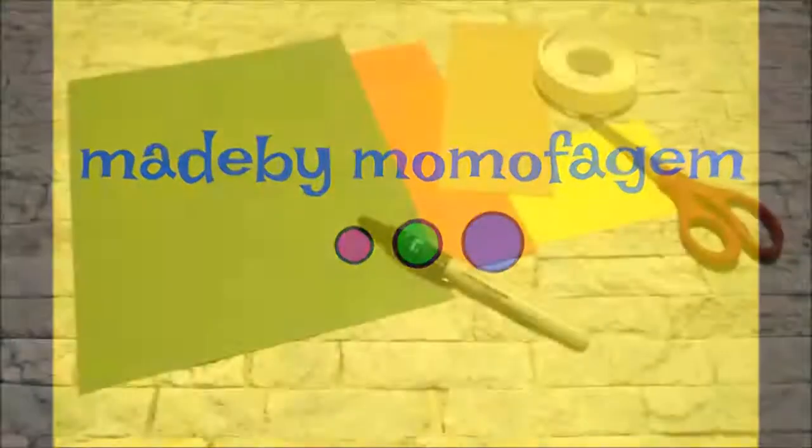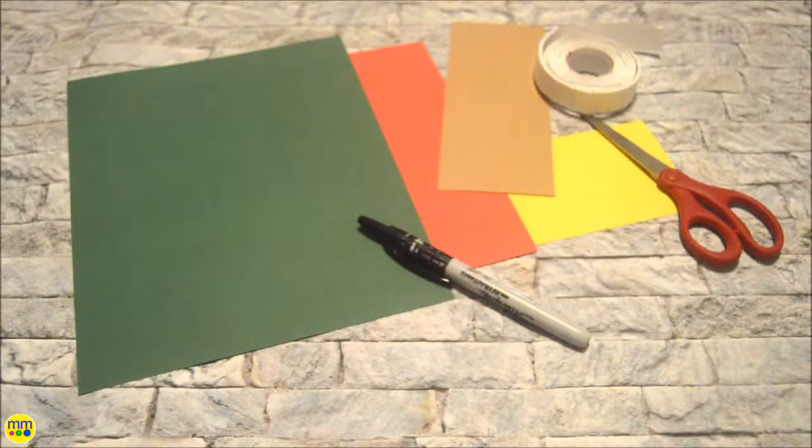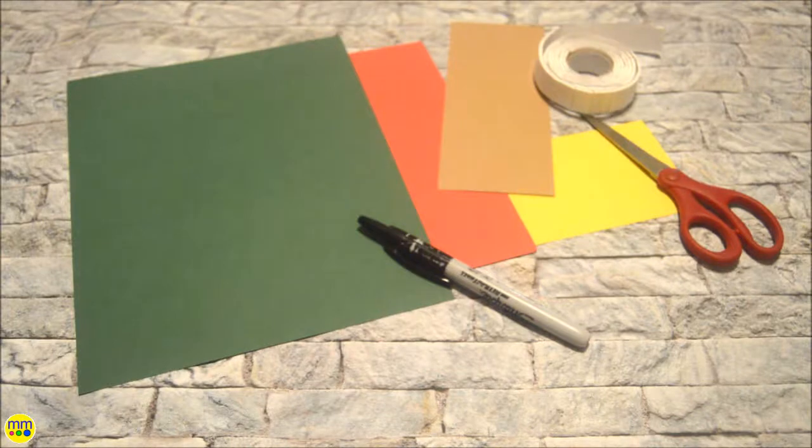To create your own Christmas tree name craft you need red, yellow, brown, and green cardstock, a black sharpie, adhesive squares, and scissors.